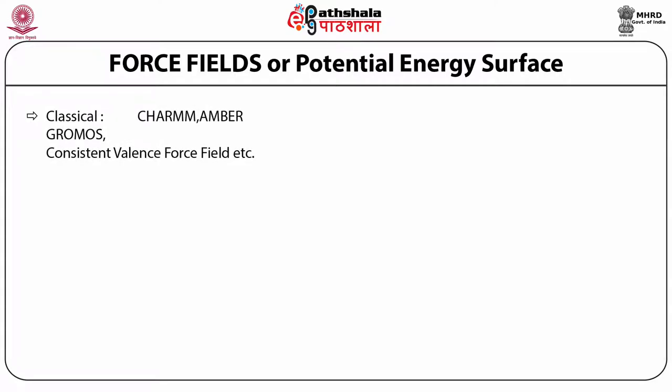The most important and widely used force fields for macromolecules are classical force fields. CHARMM was developed by Martin Karplus's group at Harvard. AMBER was developed at UCSF by Peter Kollman's group. GROMACS, presently called GROMAX, was developed by Van Gunsteren's group in Switzerland.